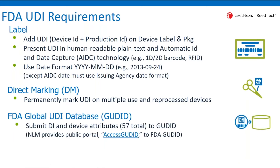There are requirements to report the device identifier — this is not the production identifier. This is just the first portion, the device identifier, and a number of attributes. Totaling 57 attributes are reported to the FDA's global UDI database, GUDID.